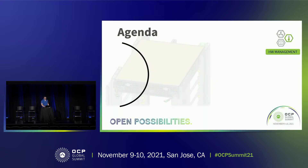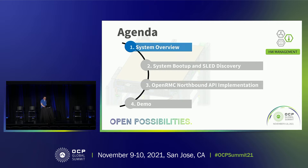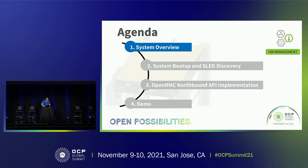Breaking down into four sections: first, we'll have a brief introduction of the system we're developing, the OpenRMC. Then we'll have an introduction for the system boot-up and sled discovery. Then we'll cover the OpenBMC northbound API implementation. The last section is going to be a demo.